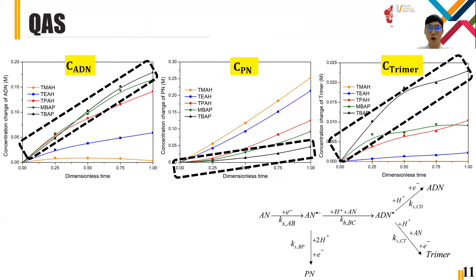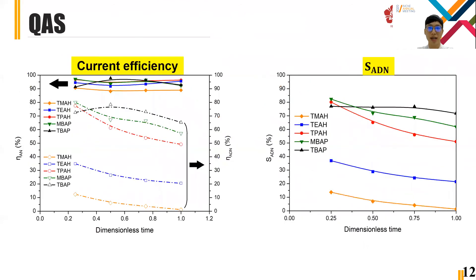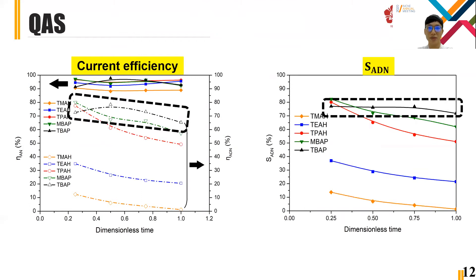Because QAS with longer carbon chain length can attract more AN to the electrode surface, which promotes polymerization. These figures show AN and ADN current efficiency and selectivity of ADN. From the results, the black line, TBAP, has the best ADN current efficiency and selectivity.